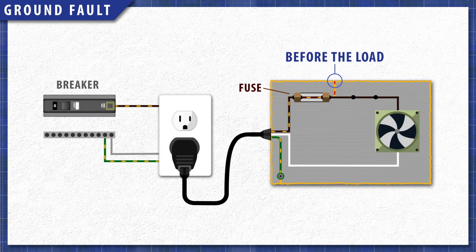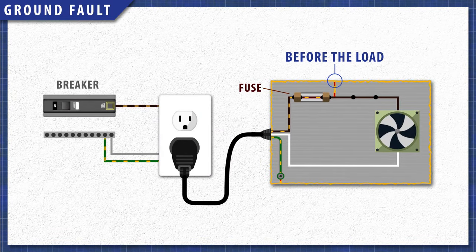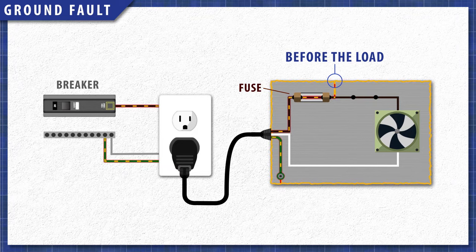If the ground fault happens before the load, the circuit is shorted, the current increases, and the breaker or fuse will blow, cutting power to the appliance.